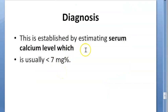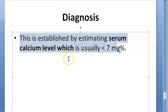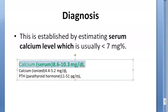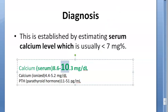You can also diagnose tetany by measuring serum calcium levels. Normal calcium levels are 8.5 to 10.3 mg/dL (approximately 10 mg/dL). If serum calcium is less than 7 mg/dL, you can establish that there is tetany.